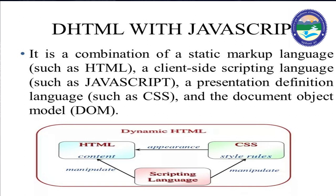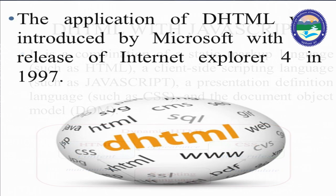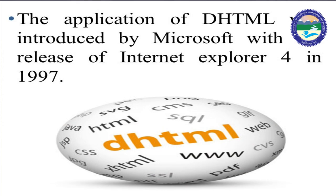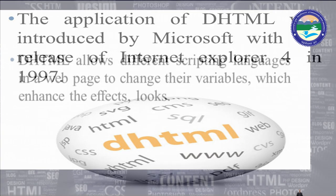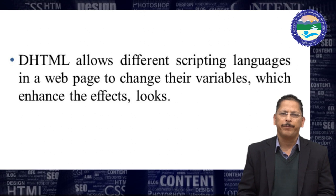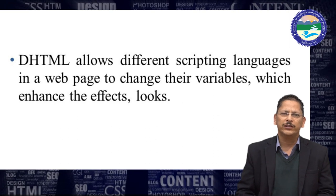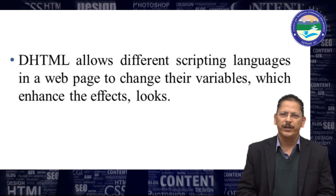JavaScript is basically a programming and scripting language. We can use this scripting language with CSS and with HTML. This combination is collectively known as DHTML. The application of DHTML was introduced by Microsoft with the release of Internet Explorer 4 in 1997. DHTML allows different scripting languages in a web page to change variables, which enhances the effect and look of any web page.